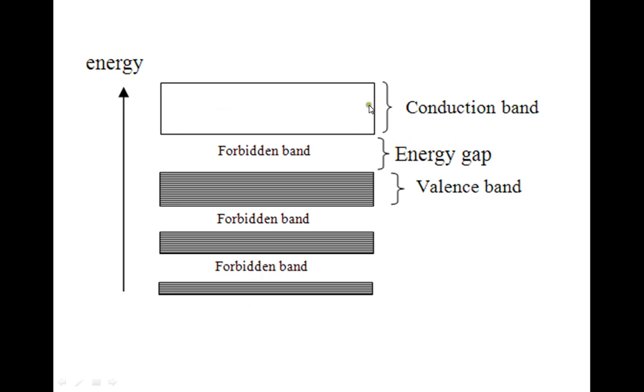So here, once again, we see very clearly that the conduction band and the valence band are separated. This separation is called the energy gap or the band gap.